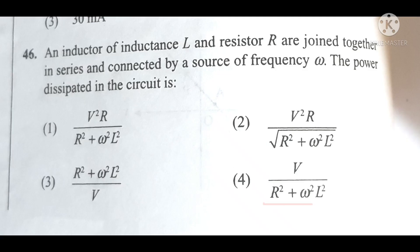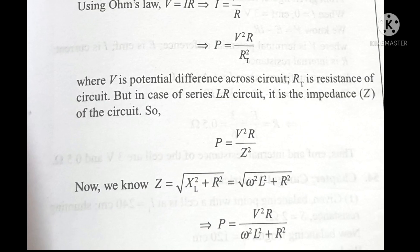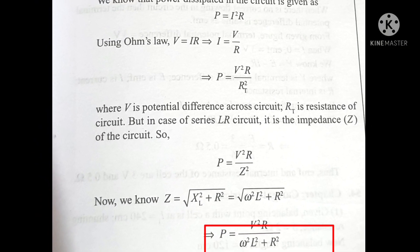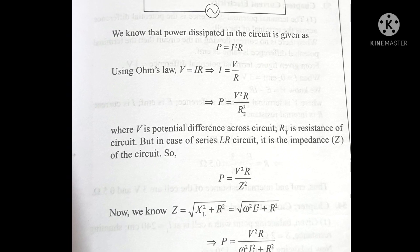In this question, denominator of option one and fourth option are same, so the answer must be between these two options. Now to decide the correct answer, we will take the help of other options. Option 2 supports option 1 by having the same numerator, so the correct answer will be first option. If you're solving without tricks, then imagine how much you have to do, so you can verify your answer.